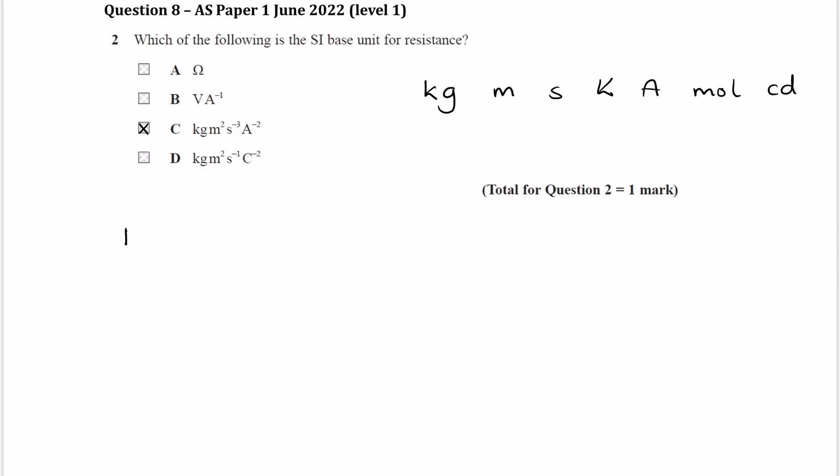So we want to think about different equations that involve resistance. We have V equals IR, that's one equation. We have P equals I squared R. We have P equals V squared over R as well.